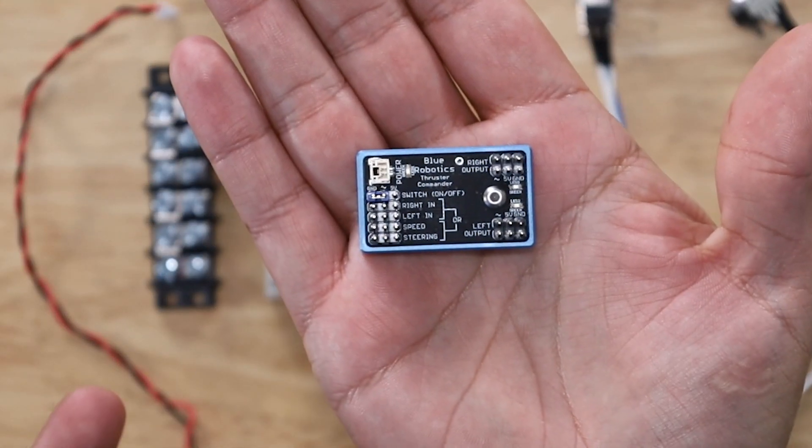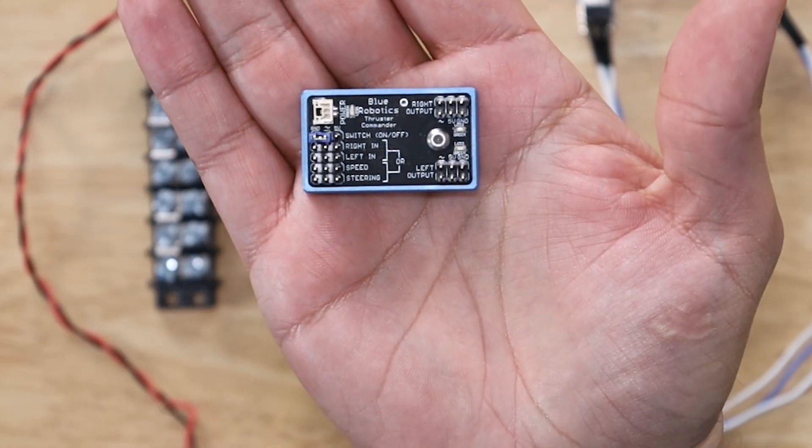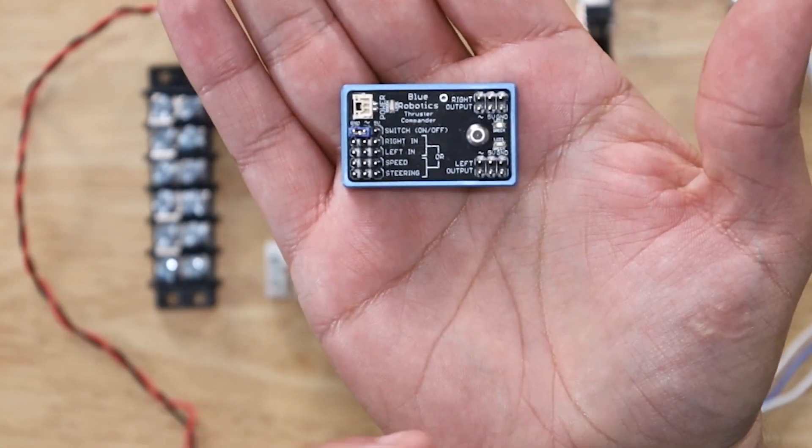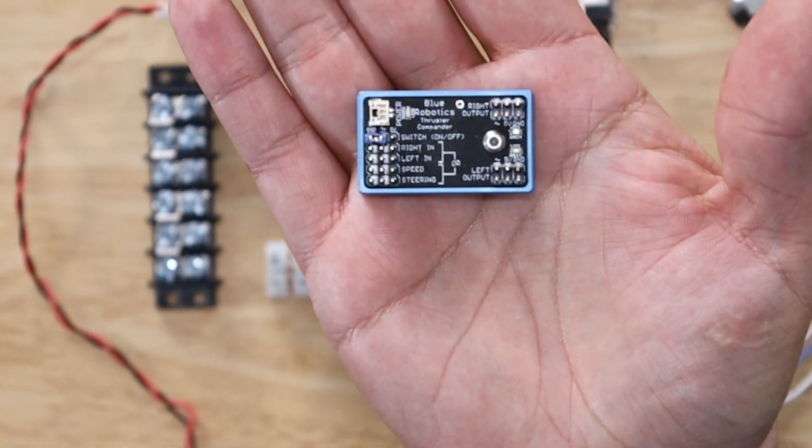So let me show you a little bit more about what comes with the thruster commander. First off, we've got the main control board right here. It's got a power input up at the top left, a variety of inputs for the potentiometers and switches on the left. And then it's got four outputs grouped into two right outputs and two left outputs on the right side of the board.